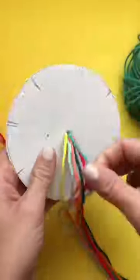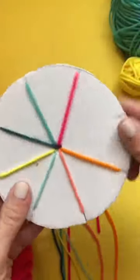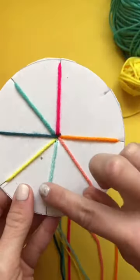I'm using yarn for this, but you can use embroidery floss. You'll have seven strands, then knot them and push the knot through the center hole.